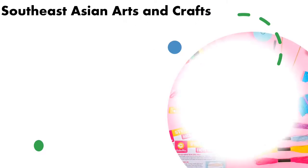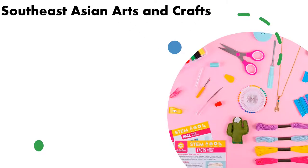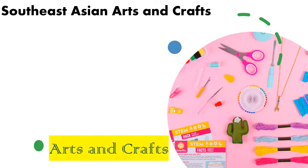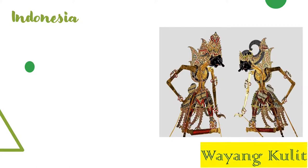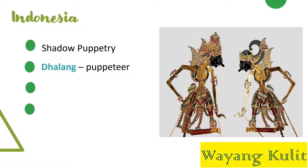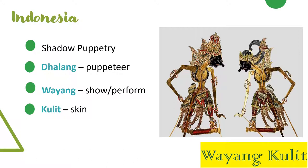Let's move on to Southeast Asian arts and crafts. Arts and crafts is a wide variety of activities involving making things with one's own hands. Wayang kulit is a shadow puppetry in Indonesia. The story was executed by a dalang, or puppeteer. Wayang is a term meaning show or perform, while kulit means skin because the puppets used in the show are made from the skin of a buffalo.